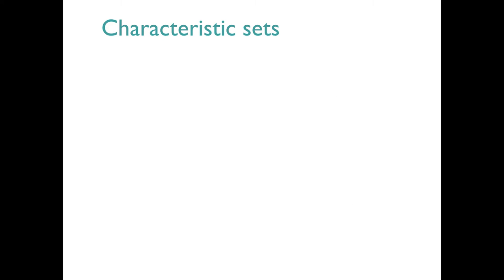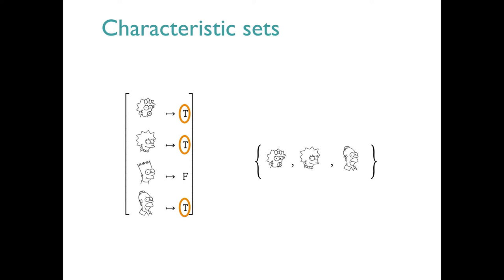It's really useful in thinking about our grammar to be able to relate sets to functions in systematic ways. The notion of a characteristic set gets us from functions to sets. So here we have a function mapping Maggie, Lisa, and Homer to true, and Bart to false. To create the characteristic set, we identify the arguments that map to true for the function, and simply assemble the corresponding entities into a set. They don't actually leave the function, of course, so let's put them back. This gives us the characteristic set of the function we began with.